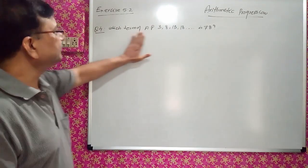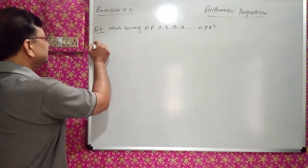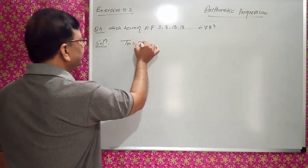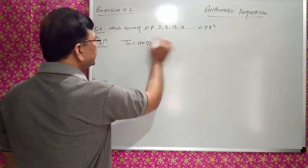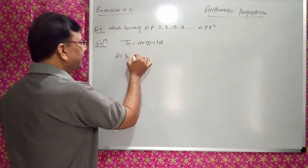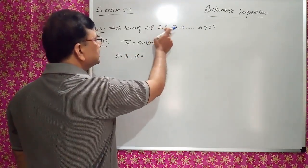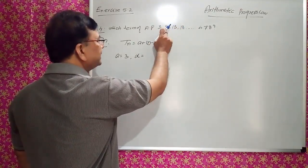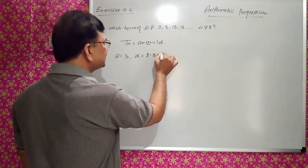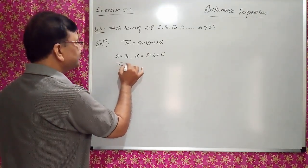Question: which term of AP 3, 8, 13, 18 is 78? Solution: we know TN = A + (N-1)D. Here A = 3, and D = 8 - 3 = 5. We can verify: 13 - 8 = 5, 18 - 13 = 5. So common difference D = 5. TN is given as 78.